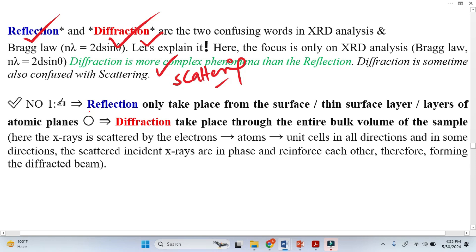Reflection only takes place from the surface or thin surface layer of atomic planes. But diffraction takes place throughout the entire bulk, entire volume. The X-ray basically scatters from electrons, atoms, unit cells in all directions.